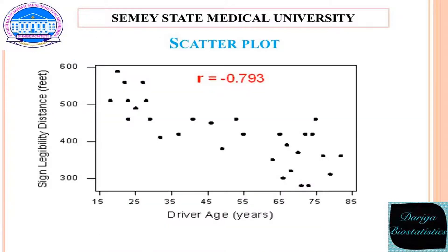This is a scatter plot. Scatter plots are similar to line graphs in that they use horizontal and vertical axes to plot data points. However, they have a very specific purpose: scatter plots show how much one variable is affected by another, and the relationship between two variables is called their correlation. Scatter plots usually consist of a large body of data. The closer the data points come when plotted to make a straight line, the higher the correlation between the two variables, or the stronger the relationship.